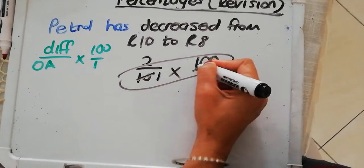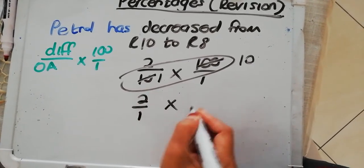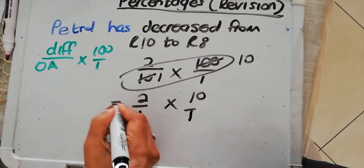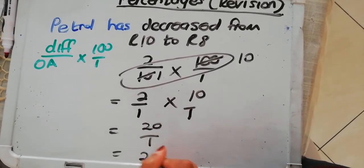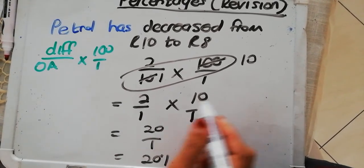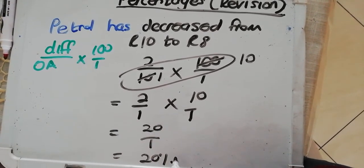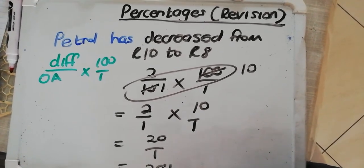10 rand divided by itself once, then we're going to 110 times. I'm left with 2 over 1 times 10 over 1. I have learned about multiplication. It's 20 over 1, which is the same thing as 20%. So by how much has the petrol decreased? It has decreased by 20%. I hope you understand this recap of percentages. Which is our goal now.